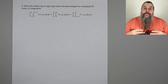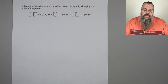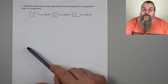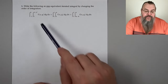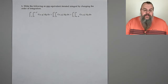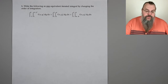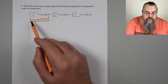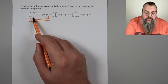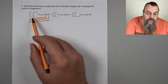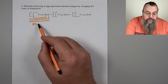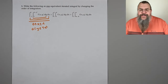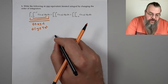Number one: we're asked to write the following as one equivalent iterated integral by changing the order of integration. Right now we have three integrals written as dy dx, and we're not actually going to integrate. This is all about the setup — notice we don't even know what the function is. So let's think about what's going on and go through each piece in turn.